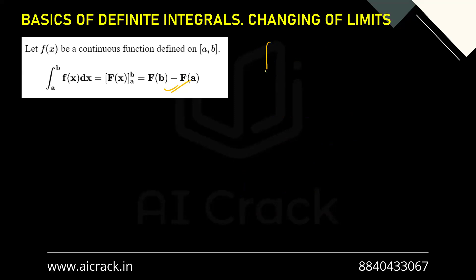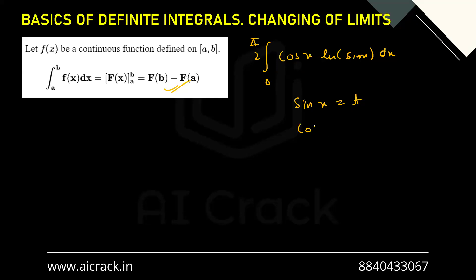What about changing of limits? Let's say we have the integral from 0 to π/2 of cos(x) · ln(sin x) dx. We can see that we have a composite function and sin(x) is the argument; we also have cos(x)dx. So the obvious substitution is sin(x) = t. If you differentiate, we get cos(x)dx = dt. So this integral becomes the integral of ln(t)dt. For the limits: when x = 0, t = sin(0) = 0; when x = π/2, t = sin(π/2) = 1. So limits change from 0 to 1. This is how you change your limits.